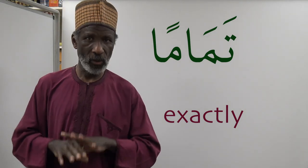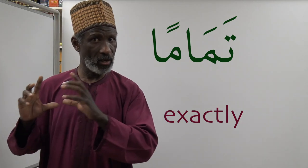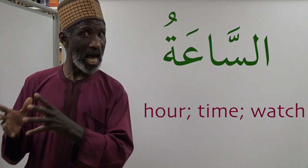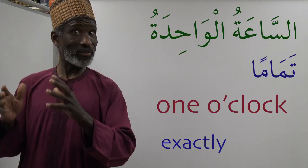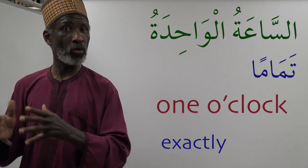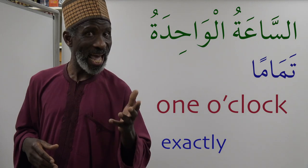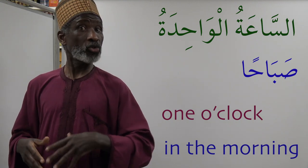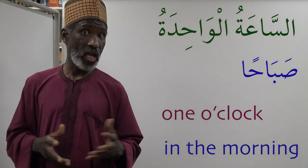Now let's see how to tell time using ordinary numbers. Remember, ordinary numbers must match the gender of the noun they modify and come after that noun. The Arabic word for time is 'assa'atu,' which is feminine, so the number after it must also be feminine. So 'assa'atu al wahidatu' means 'one o'clock.' You can add 'tamamen' for 'exactly,' or 'sobahan' for 'one o'clock in the morning.'